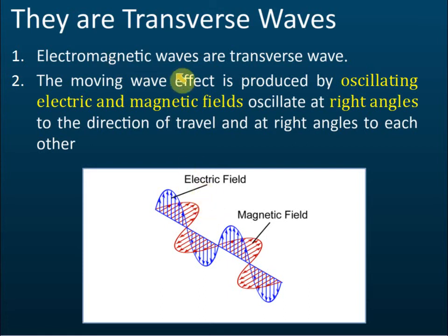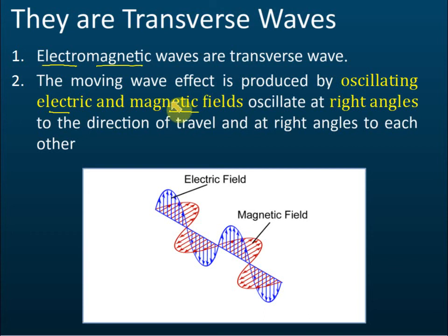For electromagnetic waves, there are vibrations of both electric field and magnetic field inside the wave — that's why we call it an electromagnetic wave. It's formed by the vibrations of electric and magnetic fields, and these two fields are at right angles to each other. If the electric field is vertical, then the magnetic field is horizontal. These two fields vibrate and combine together to form the electromagnetic wave.